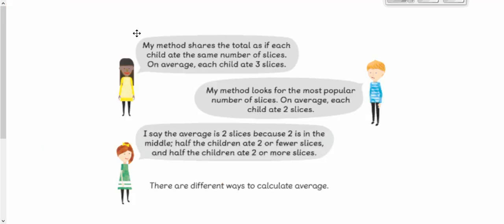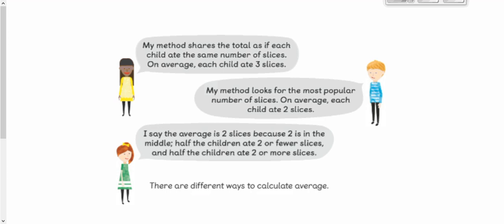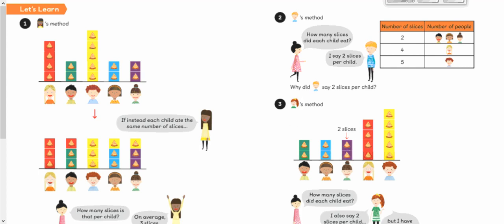Well, let's have a look at all three. The first method shared the total as if each child ate the same. So you add up all the pieces of slices and share them equally. The boy's method looked at the most popular number of slices. So were three people that had two slices? That was the most popular. So they had two slices. That's the average. But she's saying the average is two slices because the two was in the middle. If I flip back quick, it's in the middle of that chart. We've got it going up in ascending order. So two, two, two, four, then five. Two is in the middle. So that's her average. All different ways of calculating the average. We're going to look at them all over the coming weeks. But what we're going to focus on today is this top method here, sharing out.